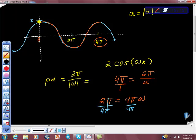Pi is canceled. 2 over 4 is 1 half. So omega equals 1 half.